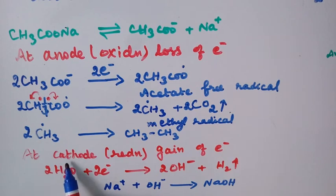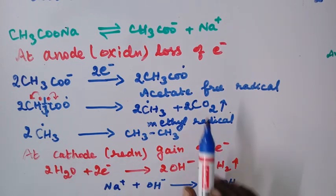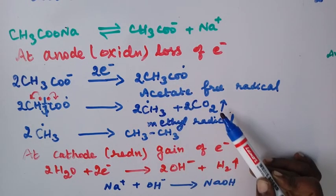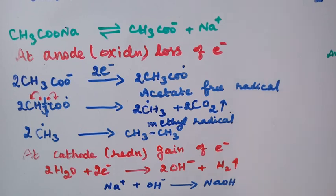So at the cathode we get hydrogen gas, and at the anode we get carbon dioxide and ethane.